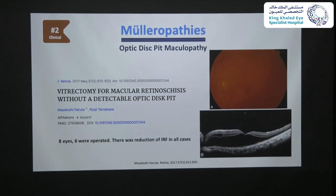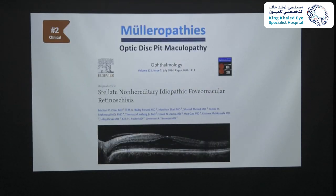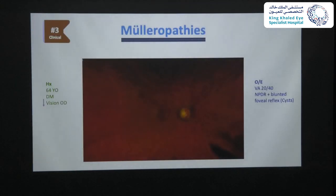Sometimes macular schisis occurs and may look similar to optic pit maculopathy but without an optic pit. A case series studying vitrectomy for patients with macular schisis without a detectable pit called it 'optic pit-like maculopathy without an optic pit.' Of eight patients, six were operated and all had variable reduction of intraretinal fluid. Before labeling a patient as having optic pit-like maculopathy without an optic pit, other conditions including SNFER and other hereditary diseases should be excluded.